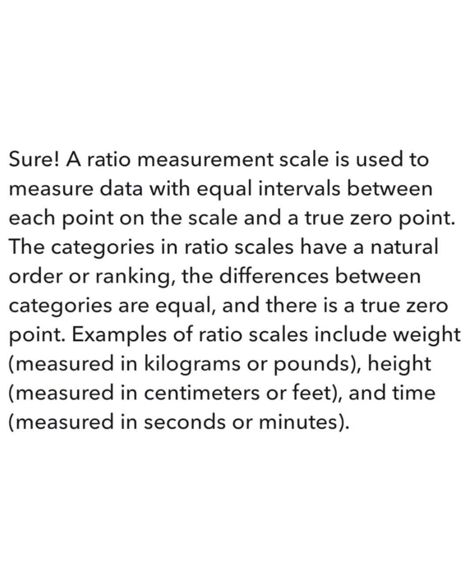The fourth measurement scale is Ratio Measurement Scale. Ratio Measurement Scale is generally used when you have to measure your data with equal intervals between each point on the scale and a true zero point. For example, weight measured in kilograms or pounds, height measured in centimeters or feet, and time measured in seconds, minutes, and hours. In ratio scales, you always measure the ratio of comparison.